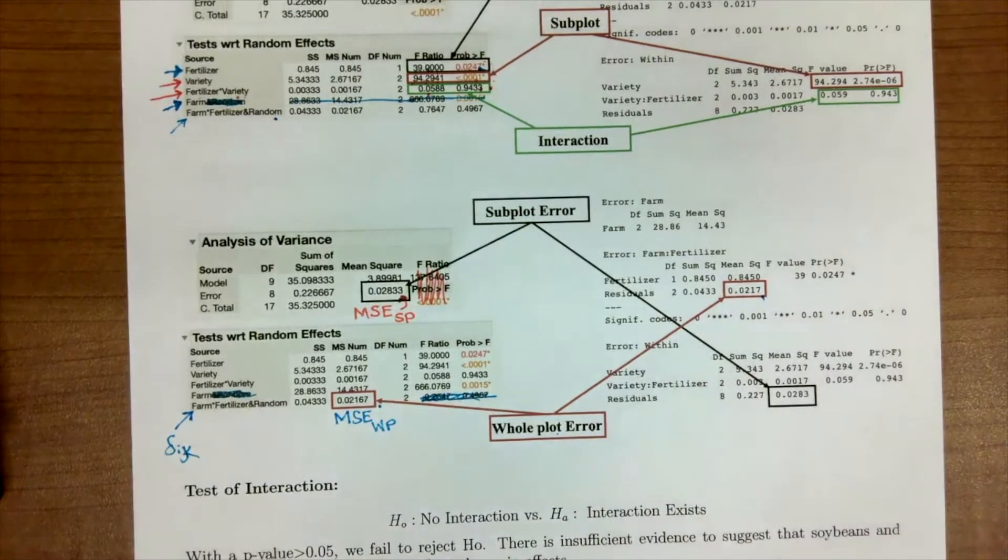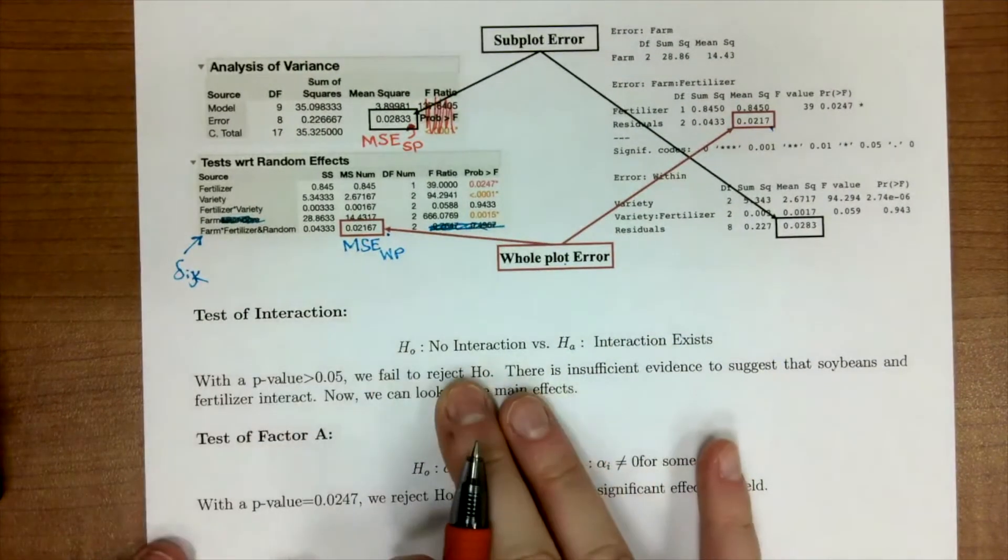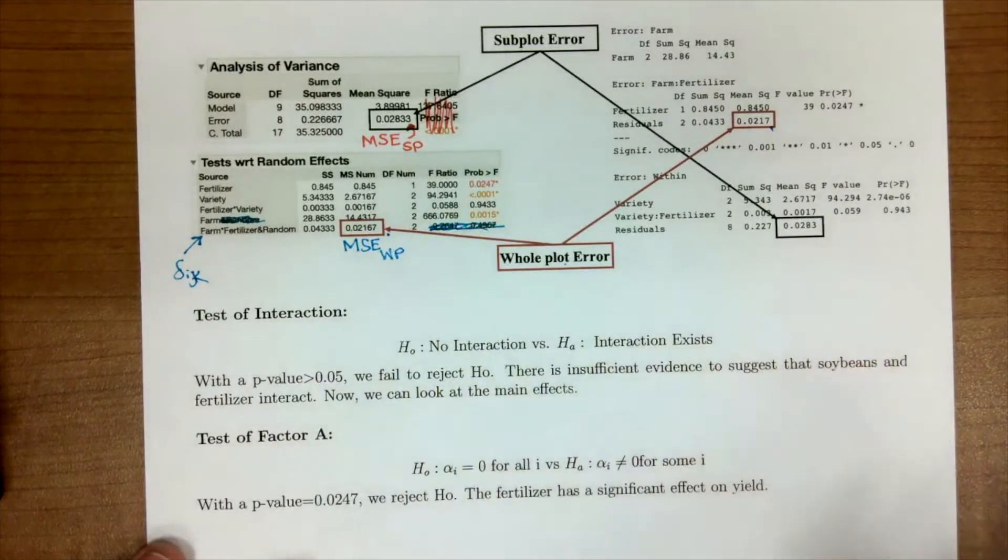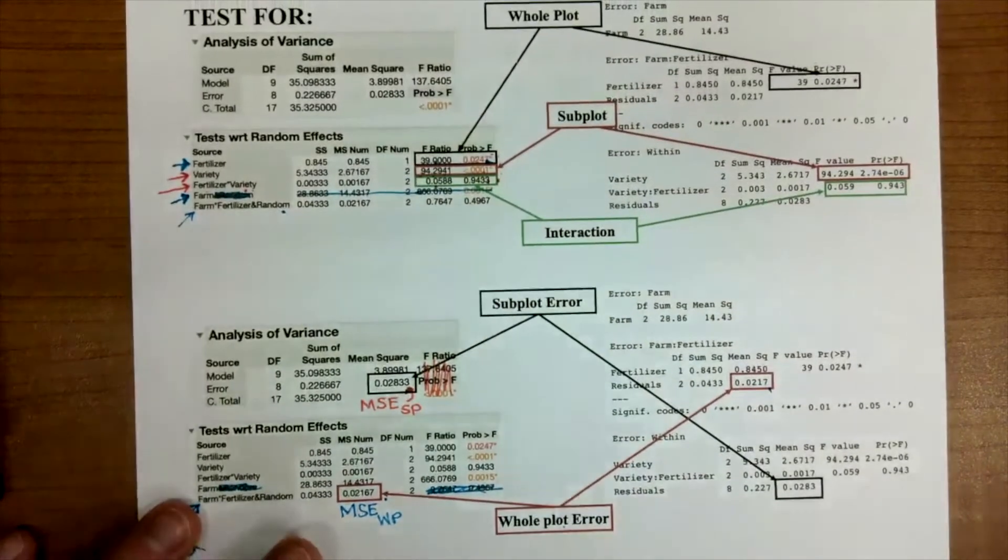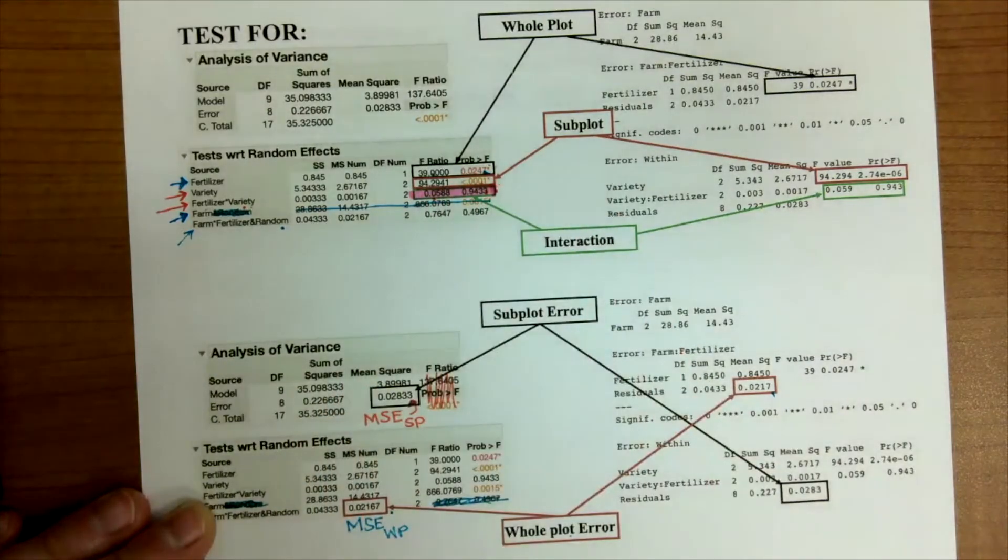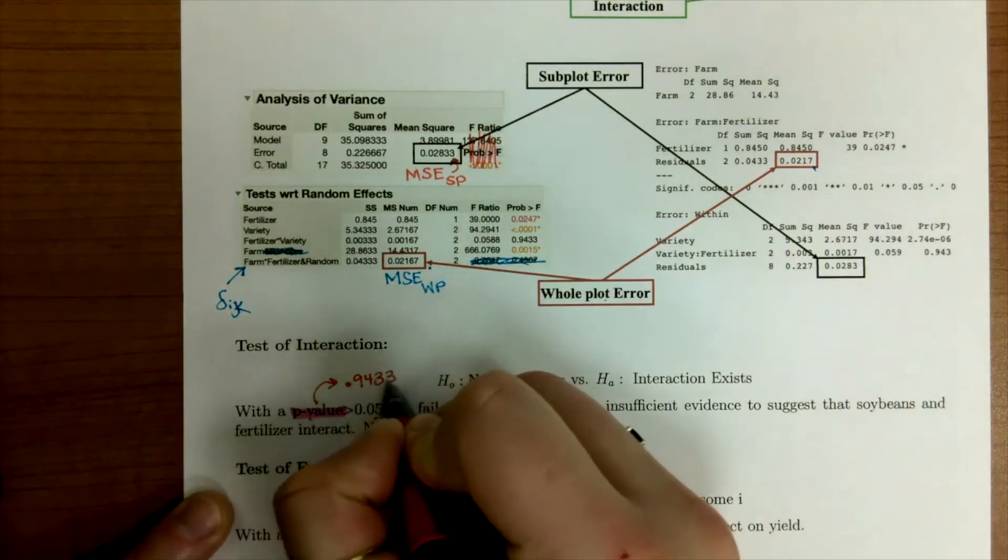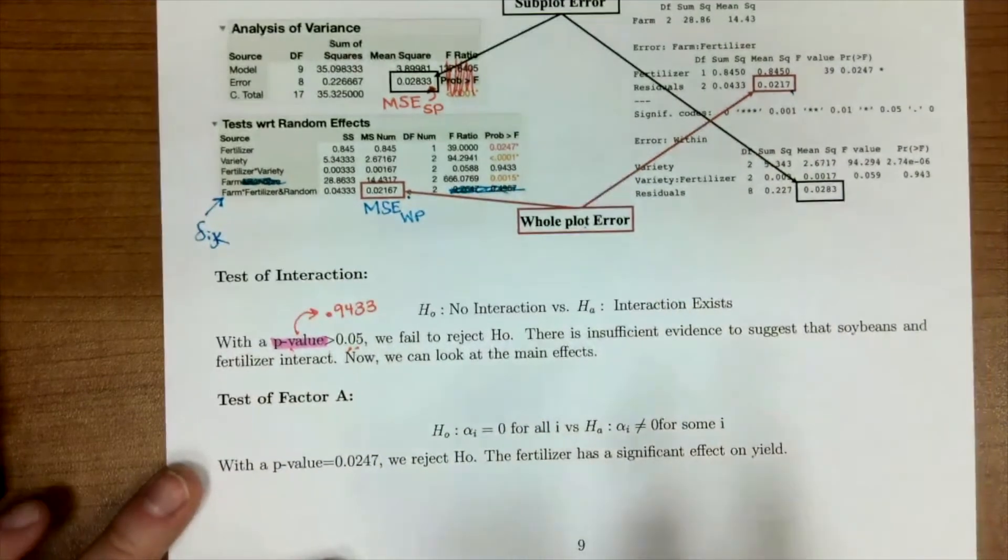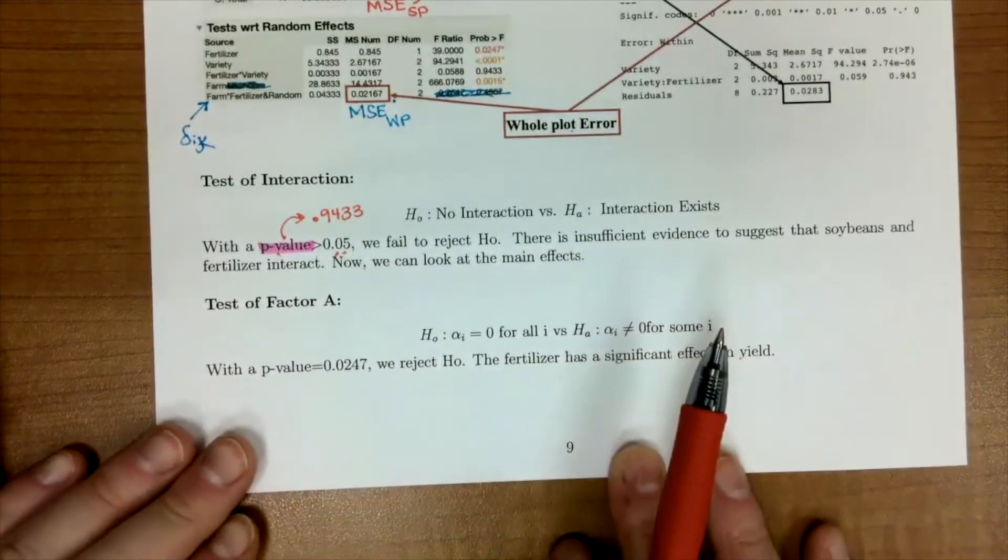Now with that laid out for us, let's go look and test and figure out what our conclusions are for our agricultural example. Again, we're in a fixed effect case, so we want to test our interaction first. Is there an interaction or no interaction? We go back - our p-value is going to be greater than 0.05. Where did this p-value come from? We're going to scroll back up and find it right here. So our p-value for our test of interaction is 0.943, which is greater than our significance level of 0.05, so we're going to fail to reject.